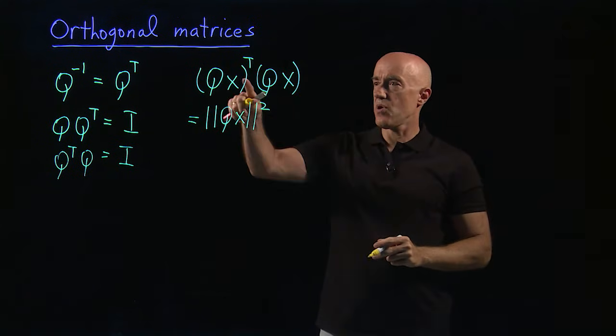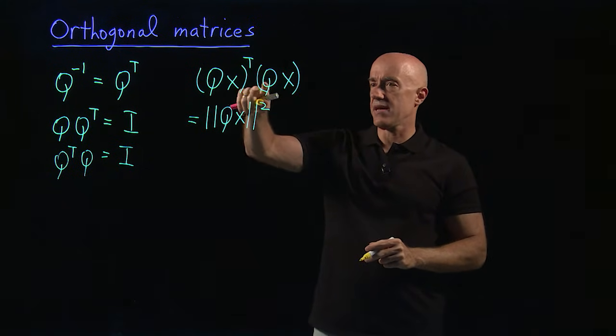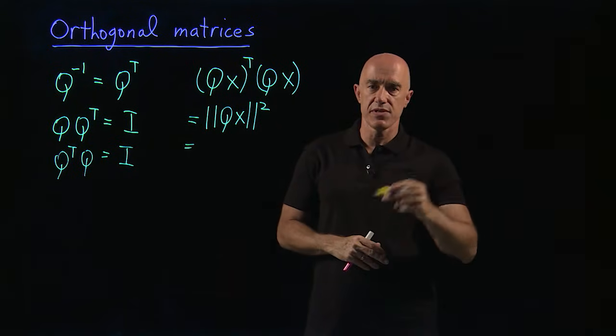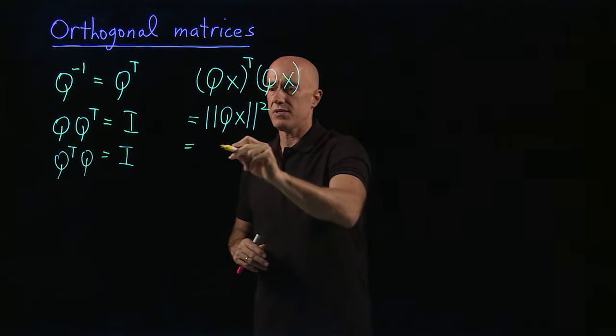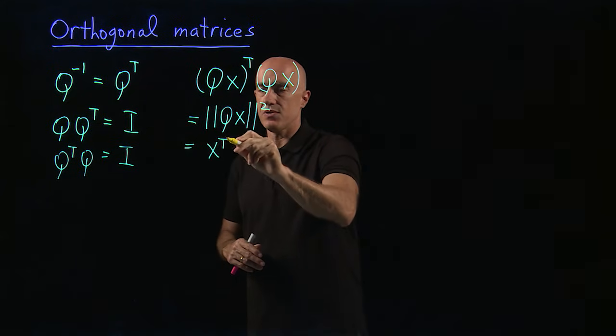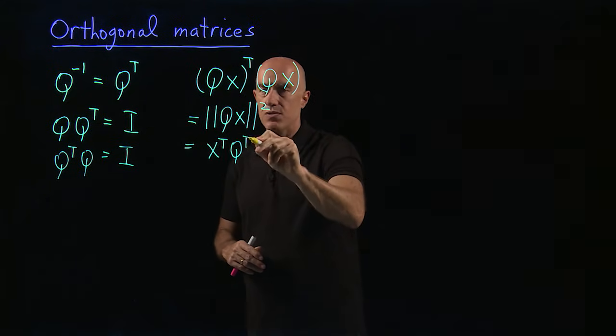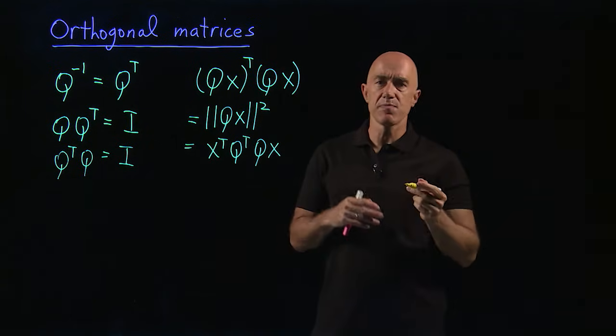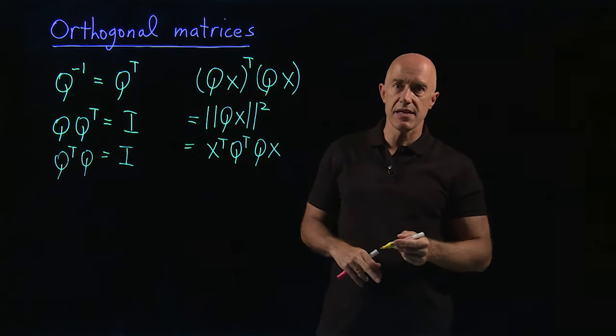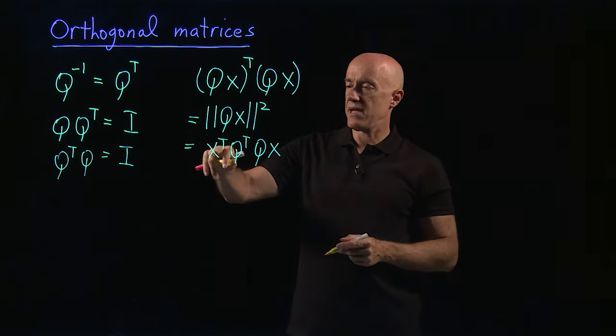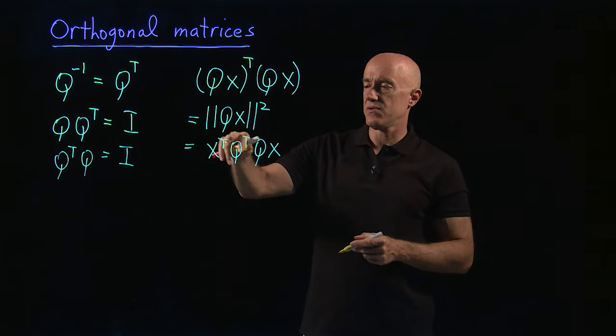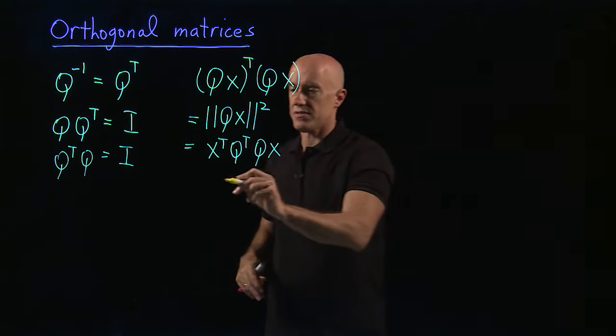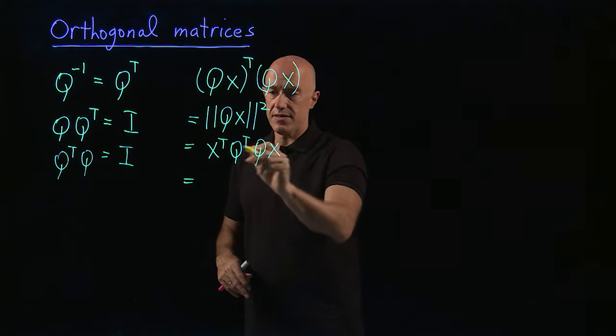So what is Q X transpose times Q X? This is equal to, AB transpose is B transpose A transpose. So this is X transpose Q transpose times Q X. But Q transpose Q is the identity matrix. And a matrix times the identity matrix is equal to the matrix itself, whether it's a column vector or a row vector, it doesn't matter.